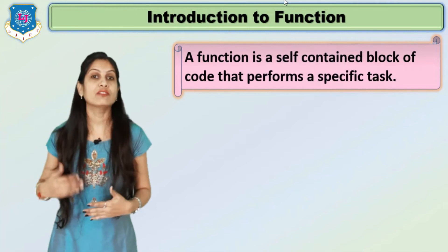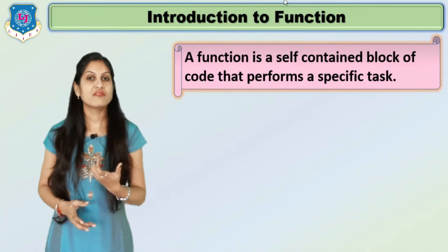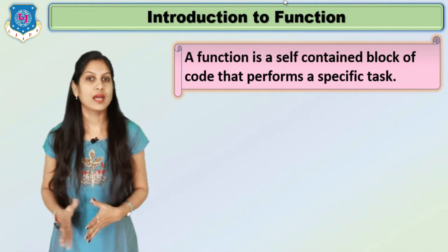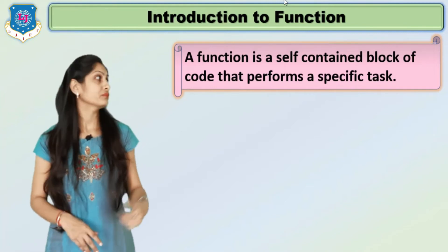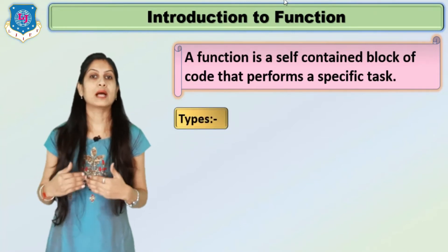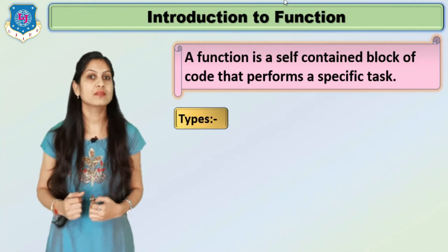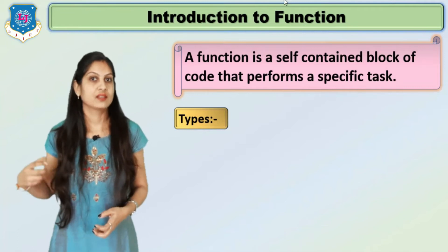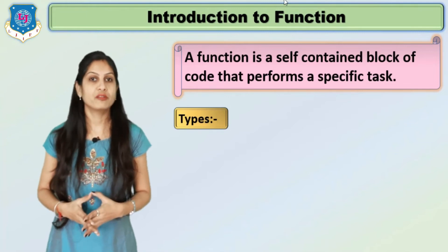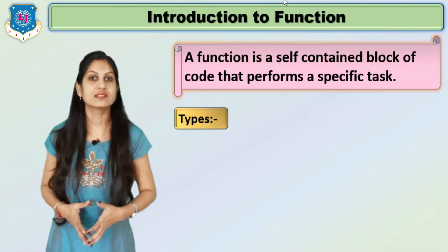A user-defined function is a self-contained block of code that performs some specific task — for example, addition, subtraction, or factorial. User-defined functions are mainly used when you have a program like scientific calculations. You can develop modules like addition, sine, cosine, and square root. Different logic can be placed in different self-contained blocks, and those are our functions.